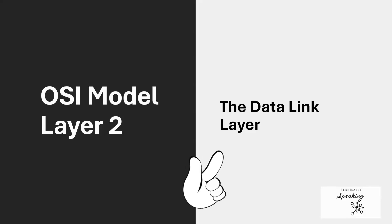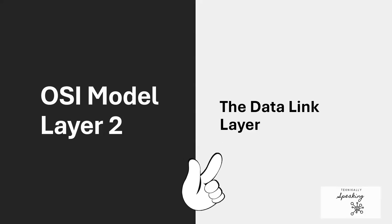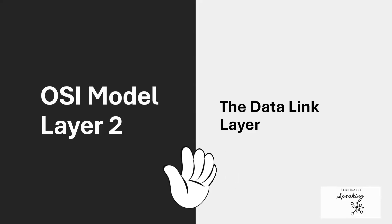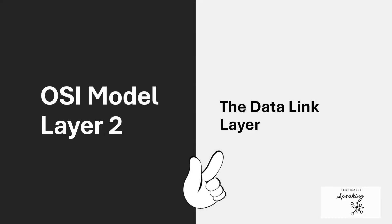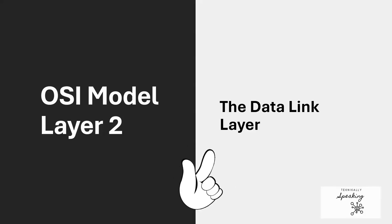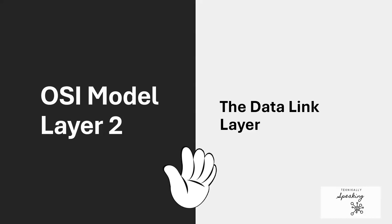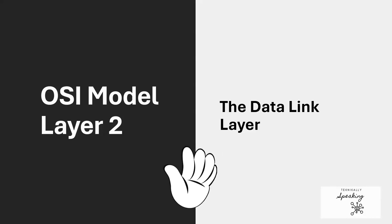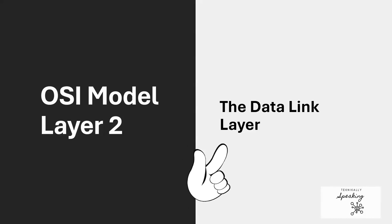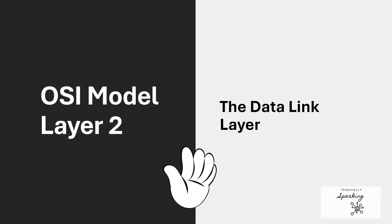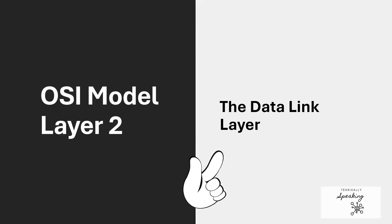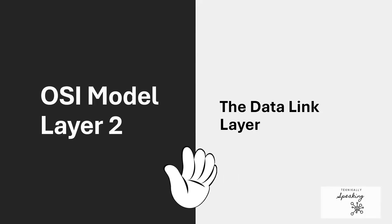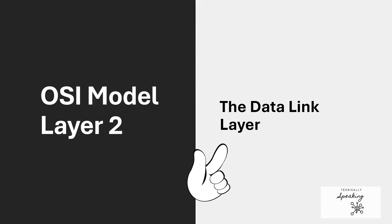Welcome back to our series on the OSI model. Today we're diving into Layer 2, also known as the Data Link Layer. This layer is super important because it ensures data can move between different devices on the same network. By the end of this lesson, you'll understand how Layer 2 works and why it is critical in making networks function properly. Let's jump right in.